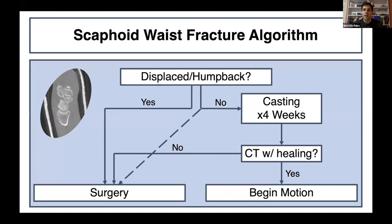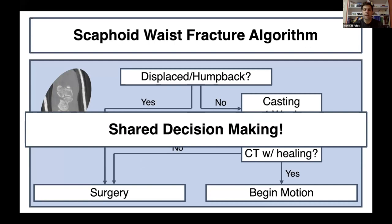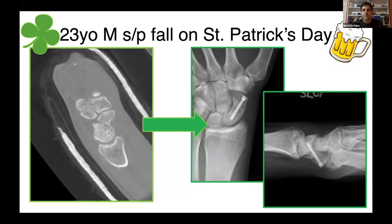Ultimately, like many things in medicine, especially surgery, this is a shared decision-making process — explaining to the patient the risks and benefits. Some indications are clearer than others. If pursuing non-surgical treatment, telling the patient ahead of time that they may require surgery is worthwhile. For this patient with a little humpback and displacement, screw fixation was performed and the fracture healed uneventfully.